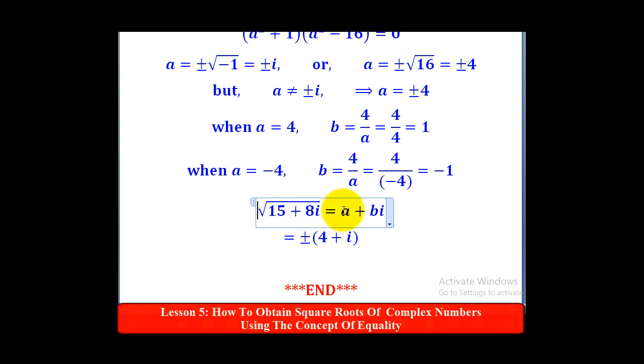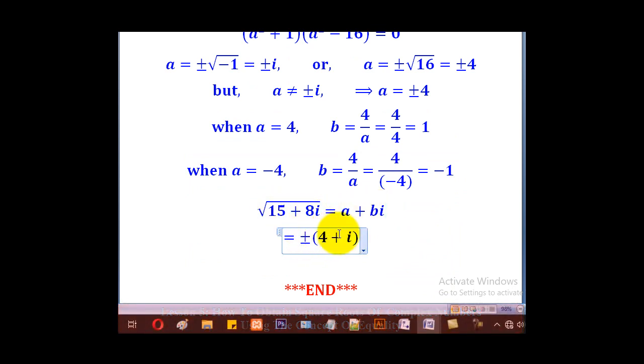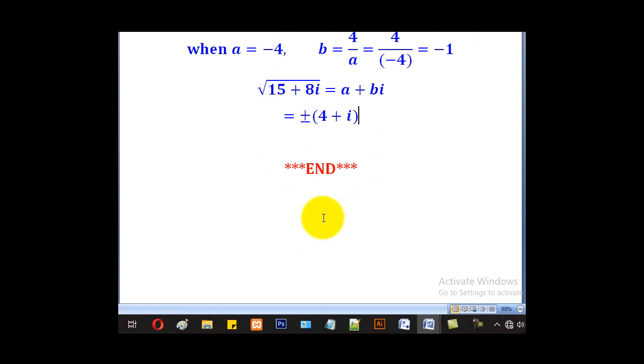And therefore, the square root, remember it's in the form A plus Bi, it will be equal to plus or minus 4 plus i. So that will be the square root, and that brings us to the end of our lesson. Thank you for watching, and please subscribe to my channel, Roa eLearning Platform. Thank you.